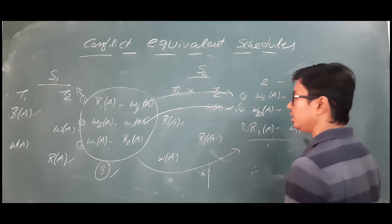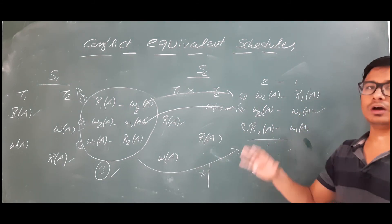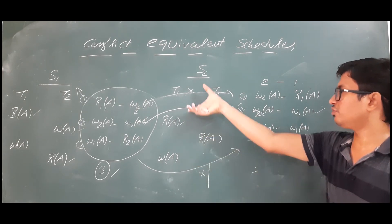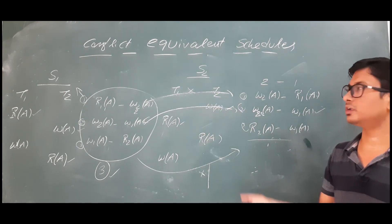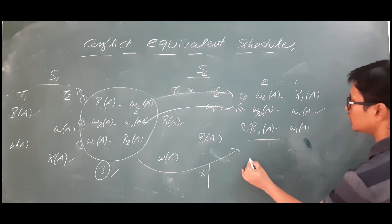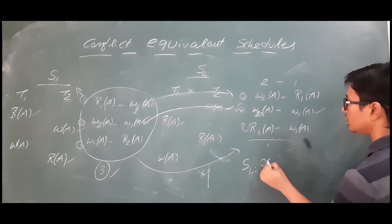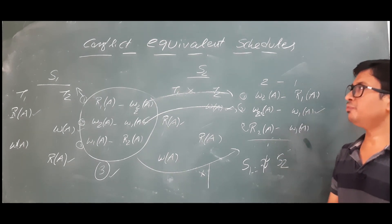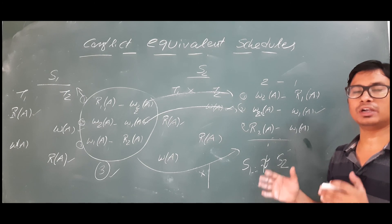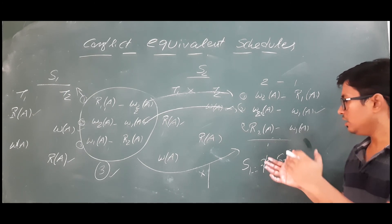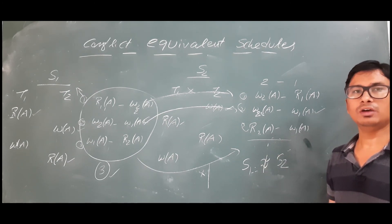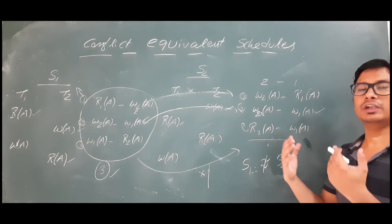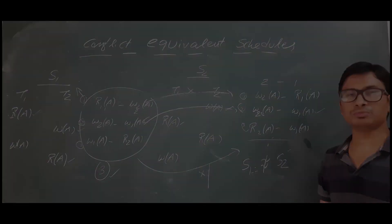Now come to W1(A) to W2(A) — this is also in reverse because in S1 it says first you perform write in transaction T1 on data item A and then it says read in this one, but S2 has it in reverse. So these two conflict operations are matching but these two are not in the same order. Therefore, I can say the schedule S1 is not conflict equivalent to schedule S2. I hope with this example you have understood how to find whether two schedules are conflict equivalent or not. For better understanding I will give more questions in the next video. Thank you so much.